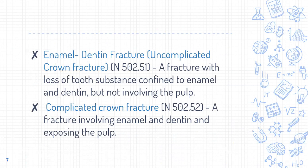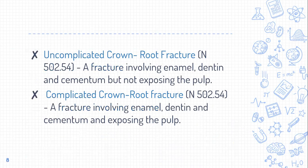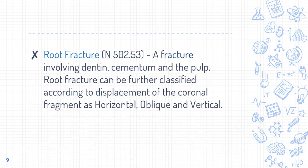The previous two fractures are uncomplicated, meaning no pulp involvement. Next is the complicated crown fracture, which involves enamel and dentin with definite pulp exposure. After that is the uncomplicated crown-root fracture, where both crown and root are involved but the pulp is not — enamel, dentin, and cementum are affected without pulp exposure. The complicated crown-root fracture involves enamel, dentin, and cementum with definite pulp exposure.